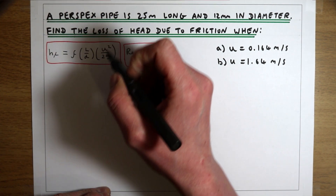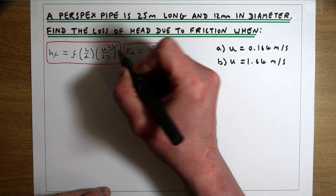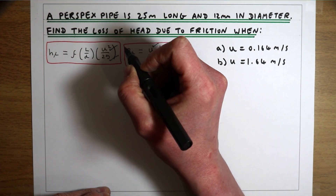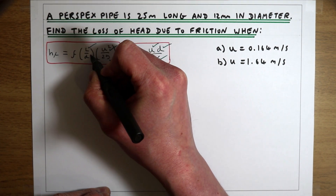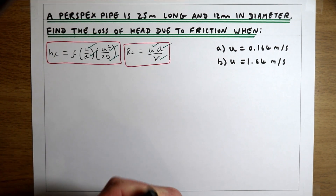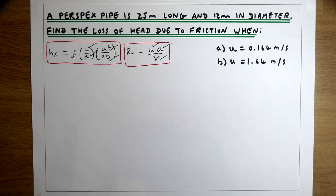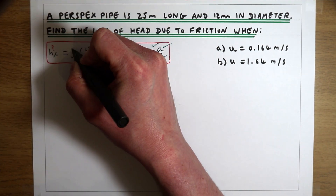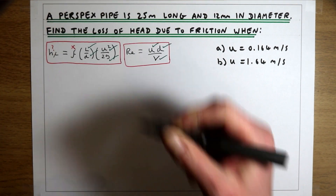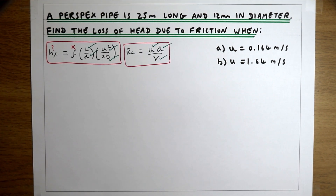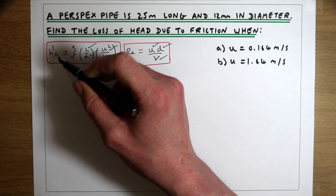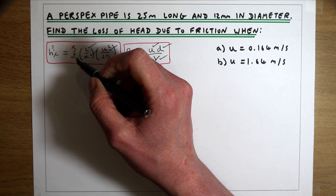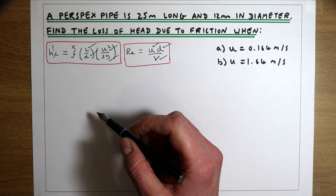For our total head loss, we know the velocity, gravity, the length of the pipe, and the diameter of the pipe. We're trying to find HF, but the thing we don't know is the friction factor F. The friction factor F is going to tell us what the head loss is, dependent upon the characteristics of the pipe.